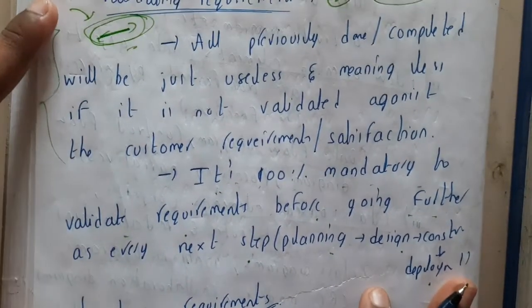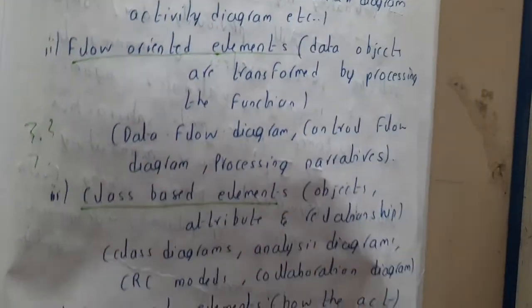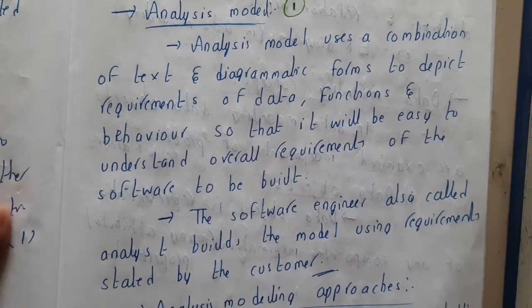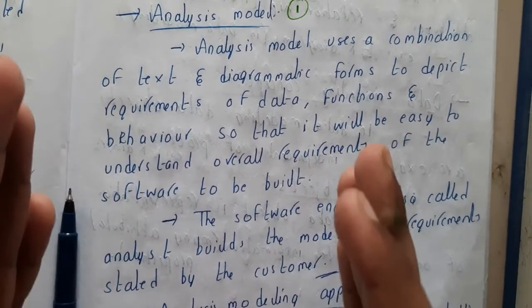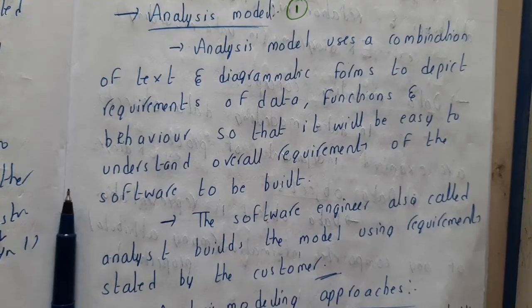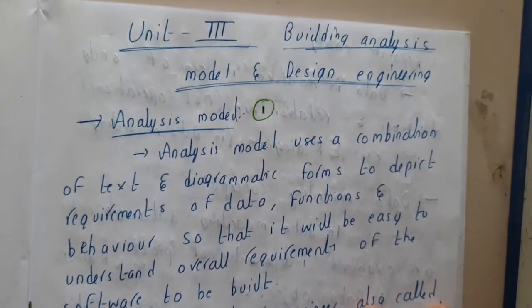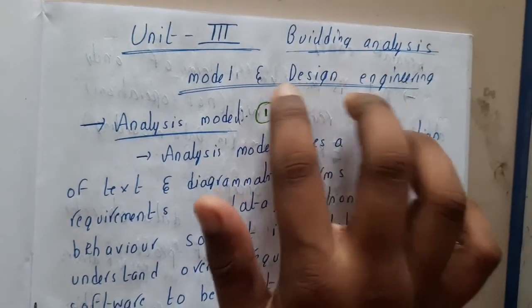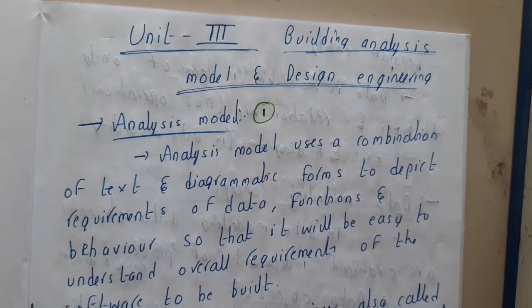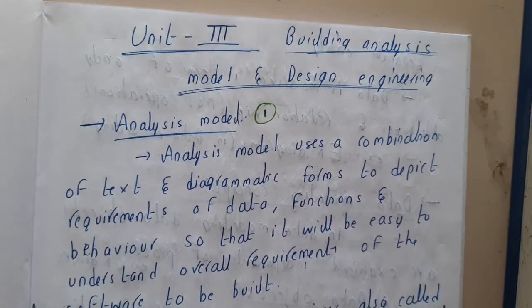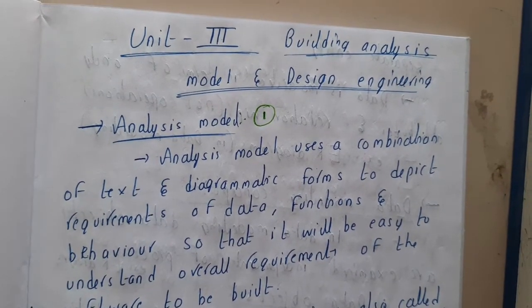So I hope everyone got some basic idea on validation of requirements and negotiation of requirements. We are now done with the second unit. We discussed some principles and how requirement analysis is done. In the next unit, we are going to start modeling — that is, analysis and design modeling. Questions like how UML diagrams are drawn will all be answered in the next unit. Thank you, thanks for watching.